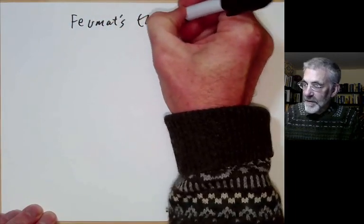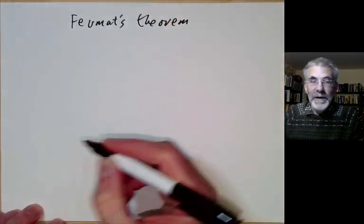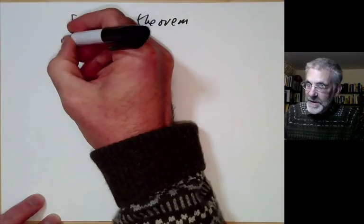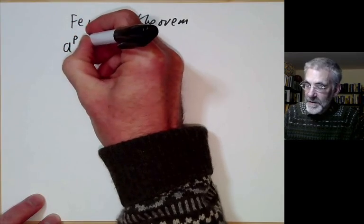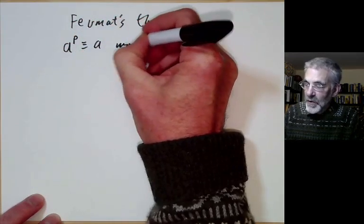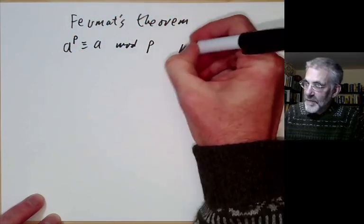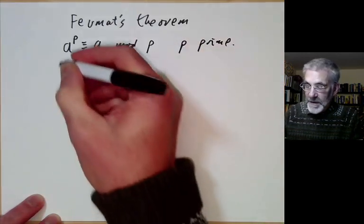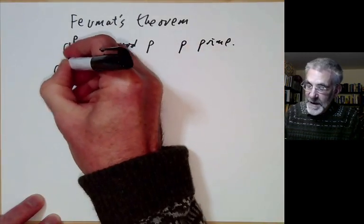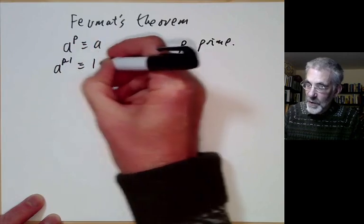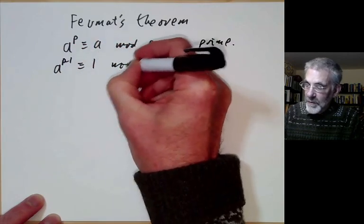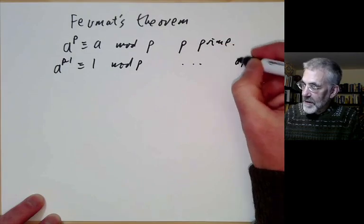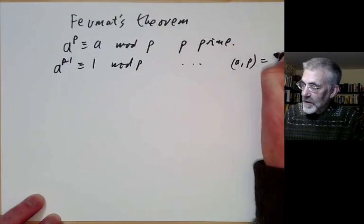In the previous lecture I covered Fermat's theorem, which says that a to the p is congruent to a mod p whenever p is prime. There's a slightly alternative version which says that a to the p minus 1 is congruent to 1 mod p whenever p is prime and a and p are co-prime.